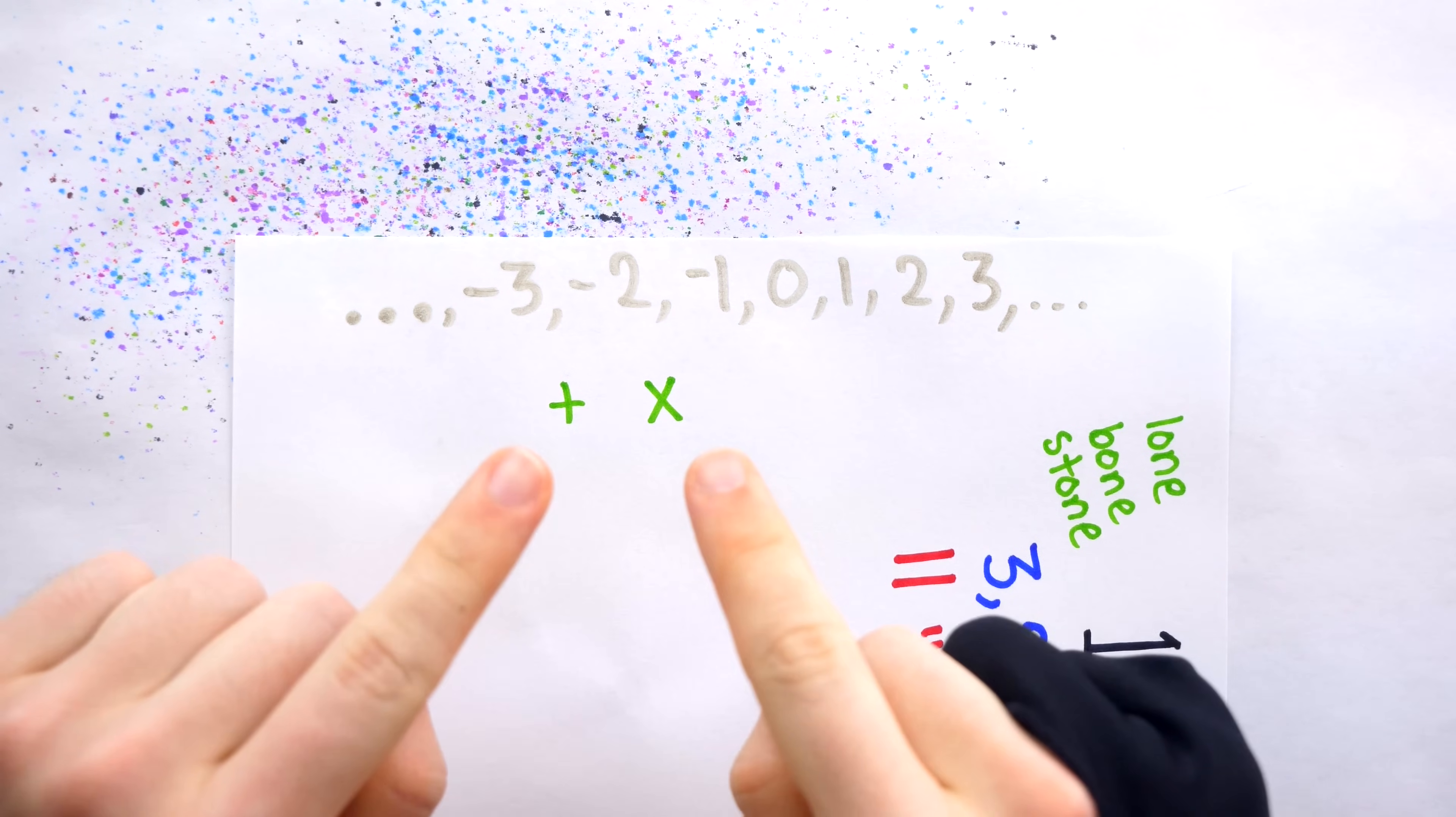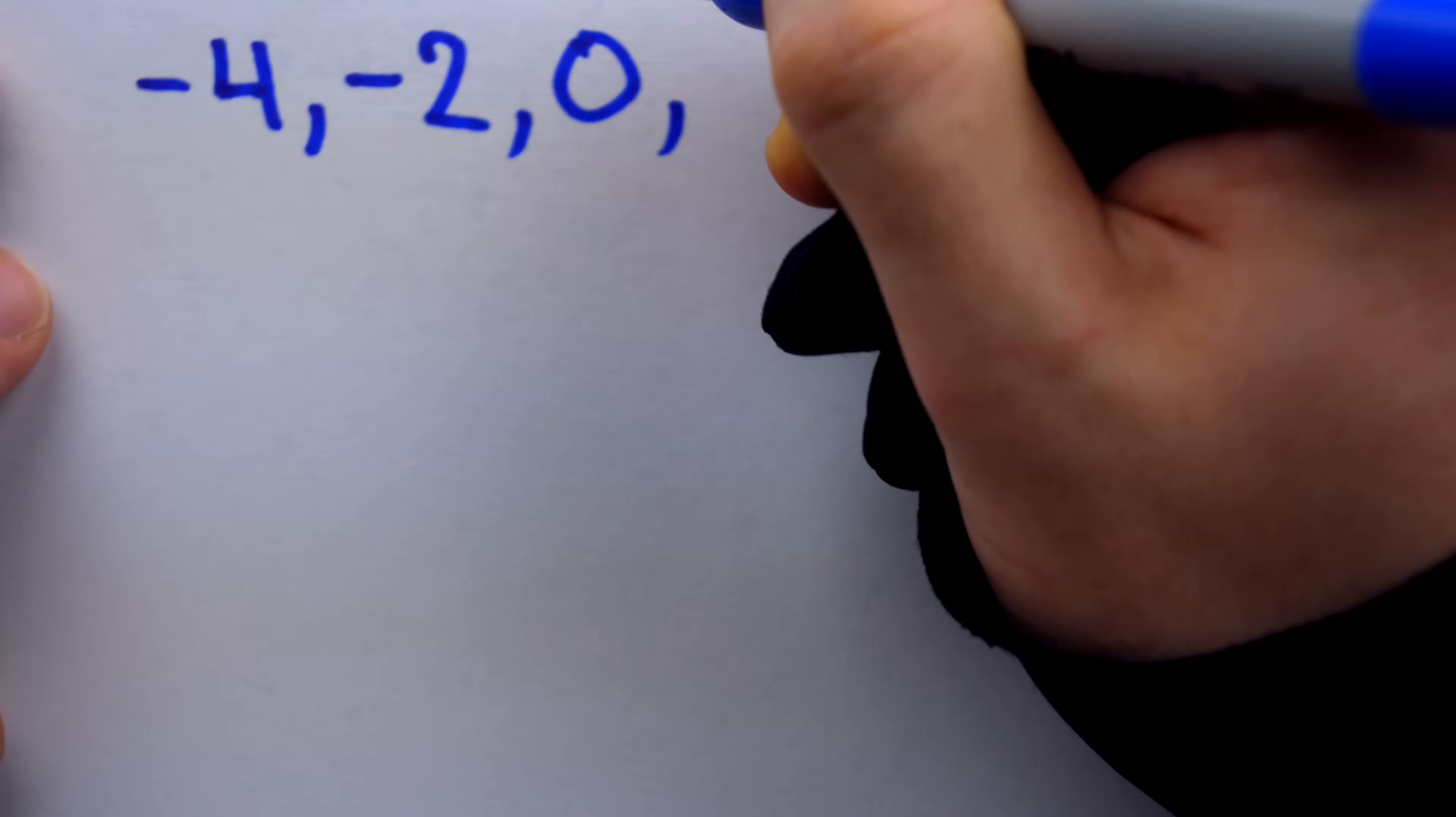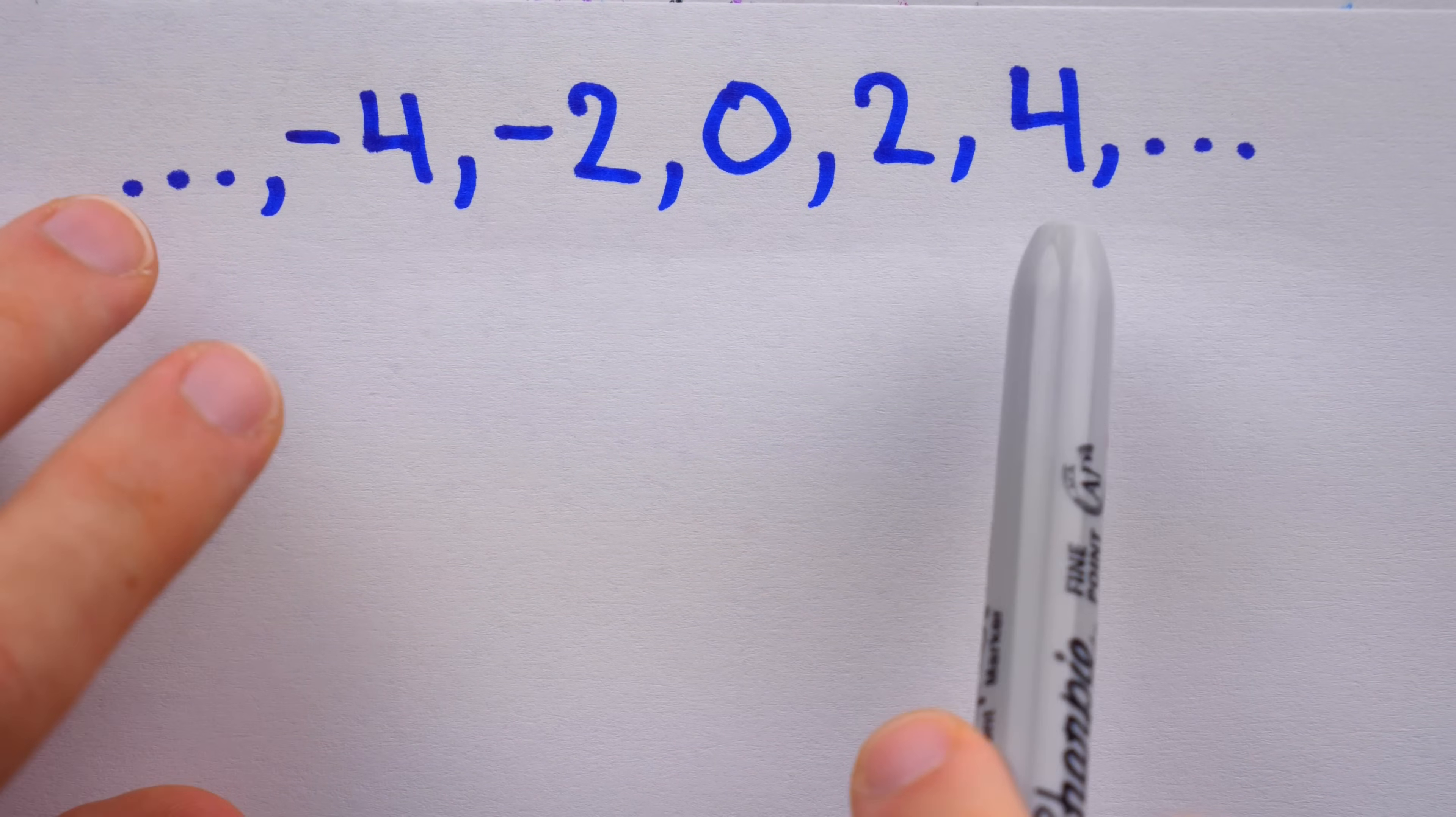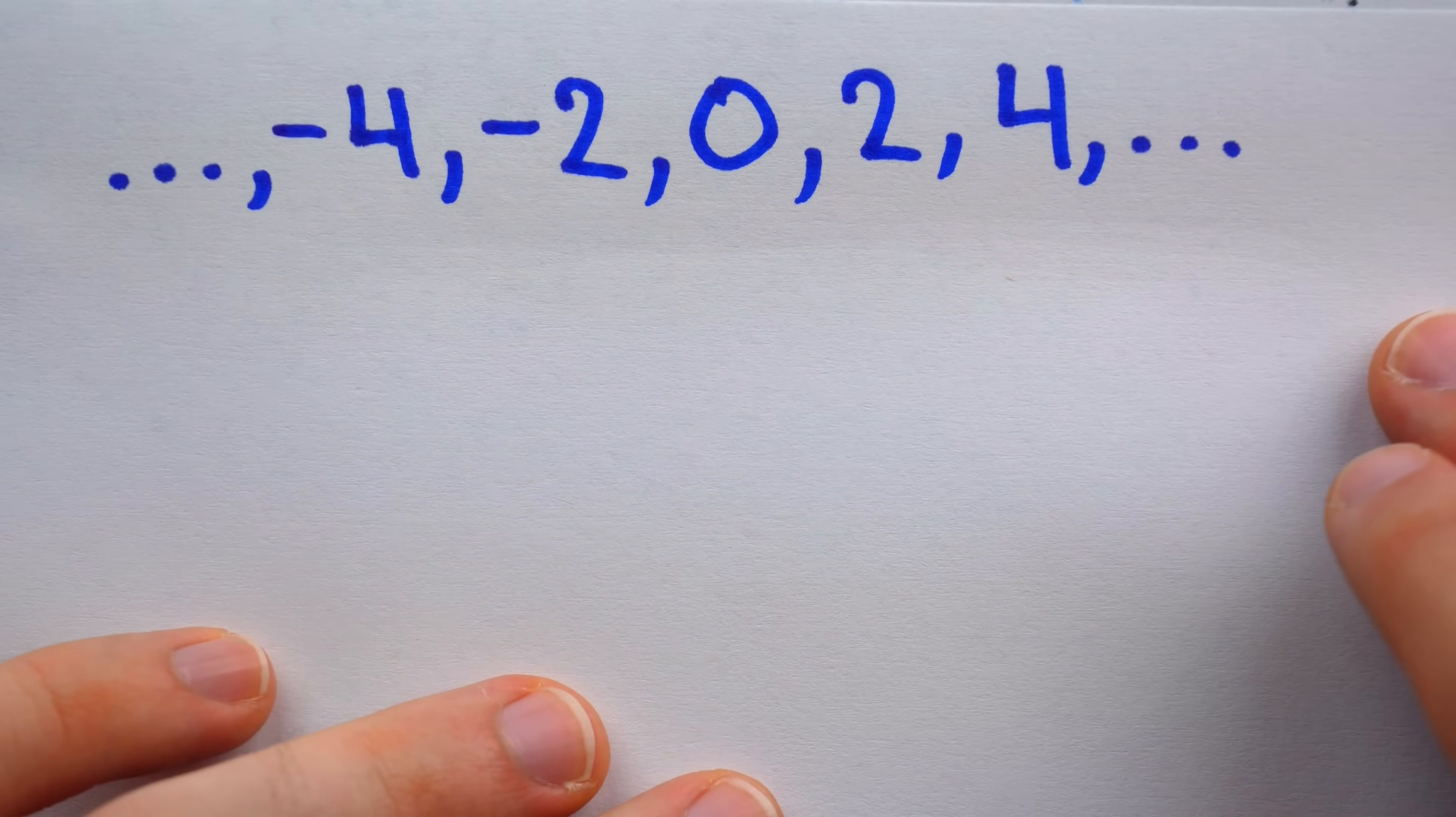But, imagine if we only had the even integers. What sort of shady characters live in this set? Well, these are numbers like negative four, negative two, zero, two, four, and so on in both directions. All those numbers which are multiples of two. Although we don't have any of those odd numbers in this set, and importantly we don't have the number one, this set still satisfies so many of those great properties with addition and multiplication.